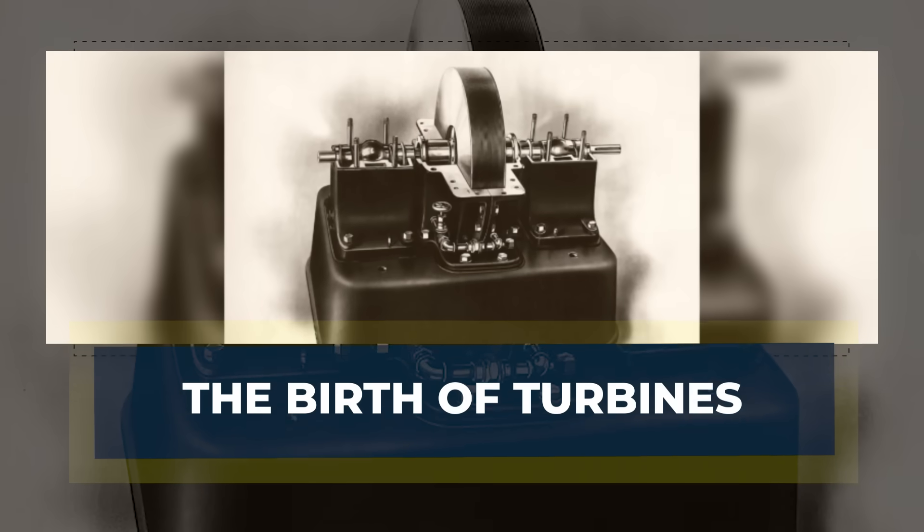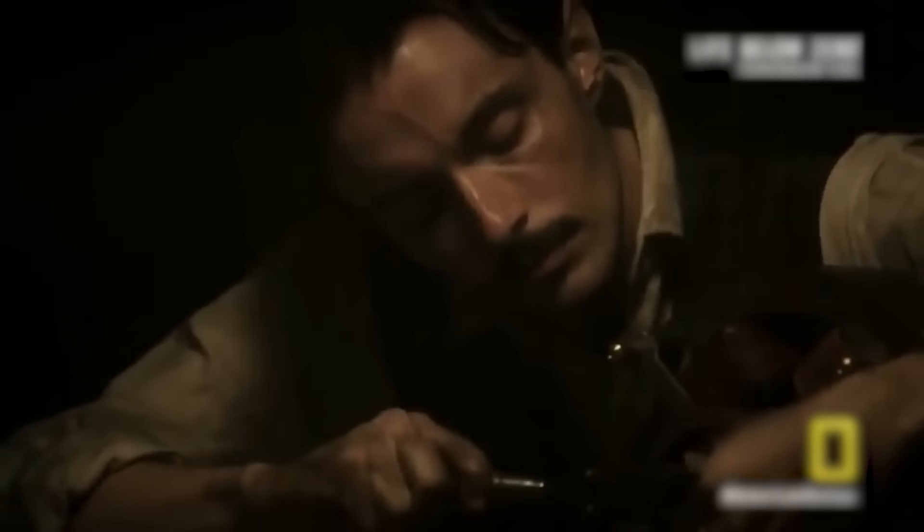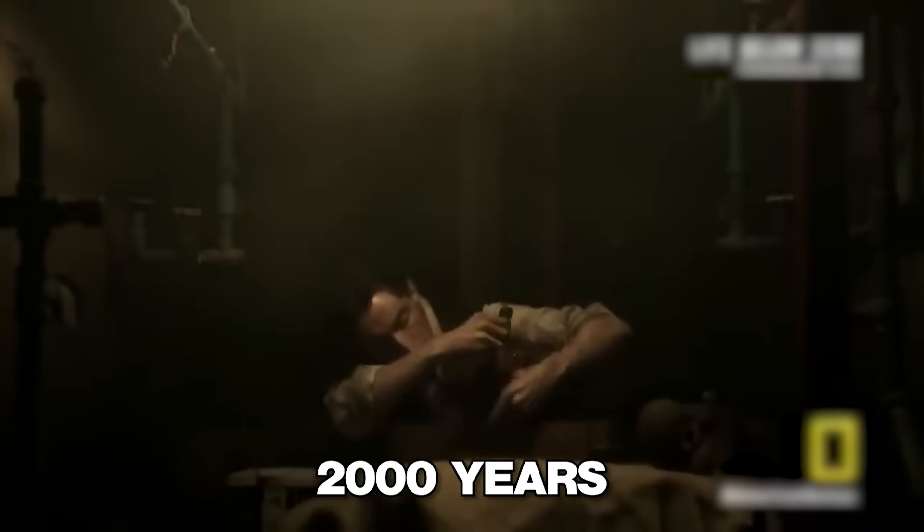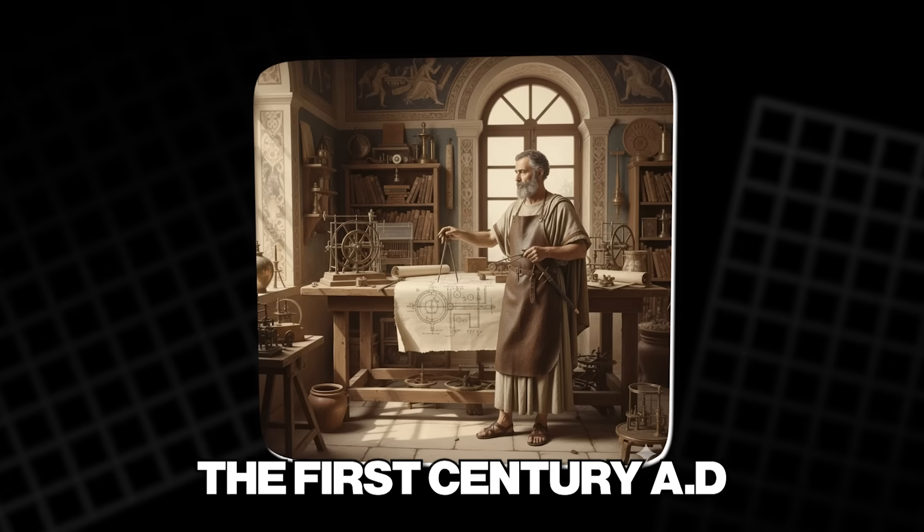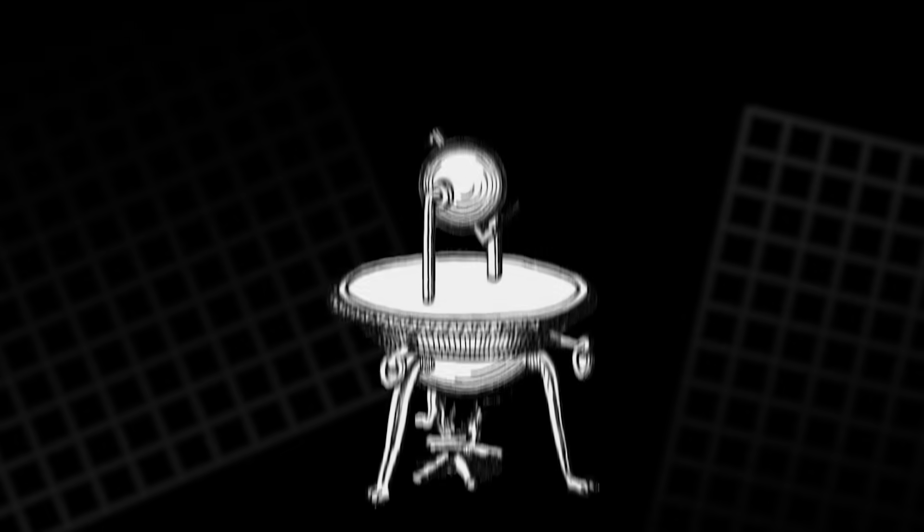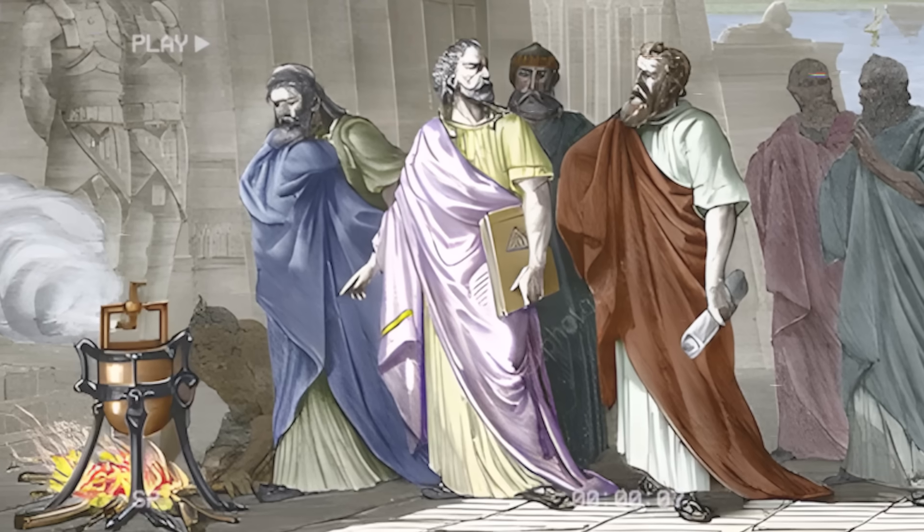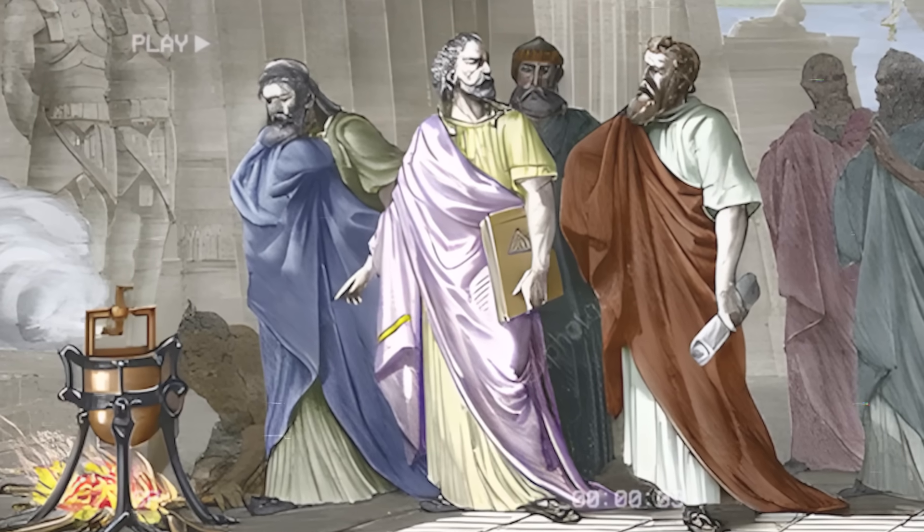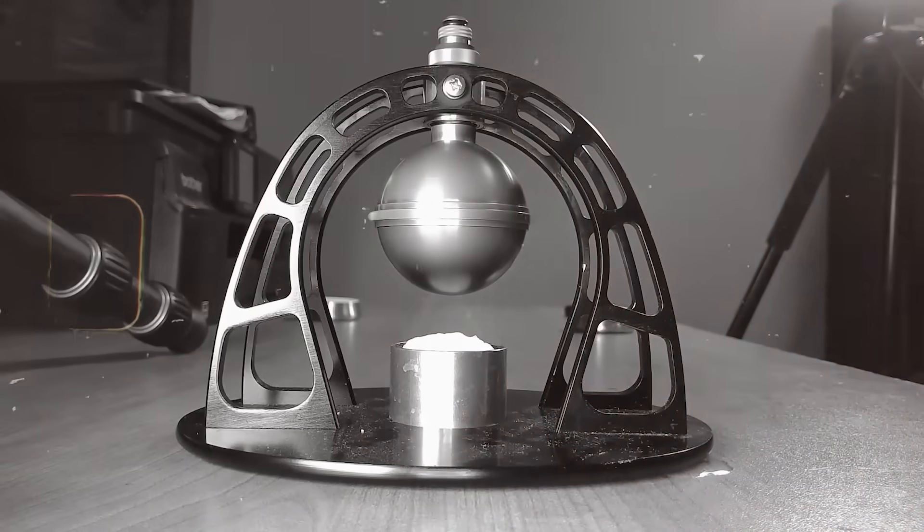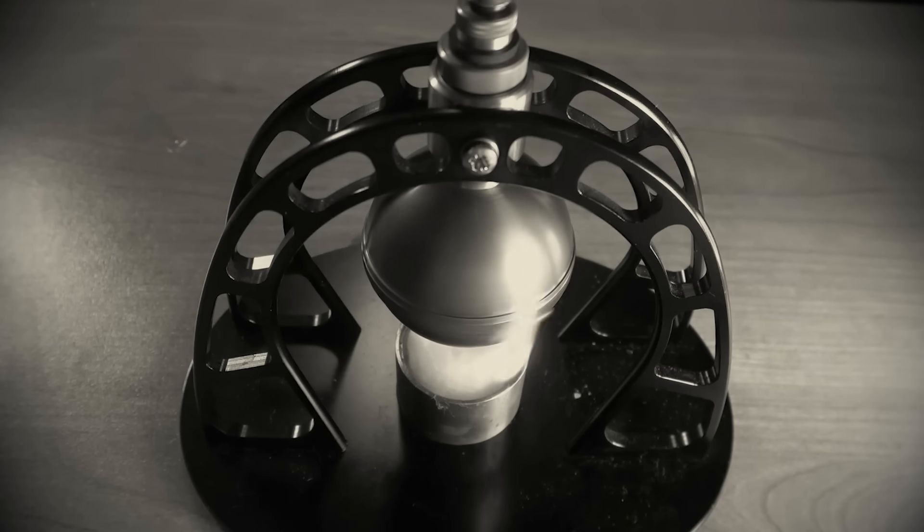The birth of turbines. To understand the genius of Tesla's idea, we have to travel back almost 2,000 years. In the first century AD, an ancient Greek engineer named Hero of Alexandria built what is now considered the world's first steam turbine. It was a simple metal sphere with two bent arms that expelled steam through tiny nozzles.